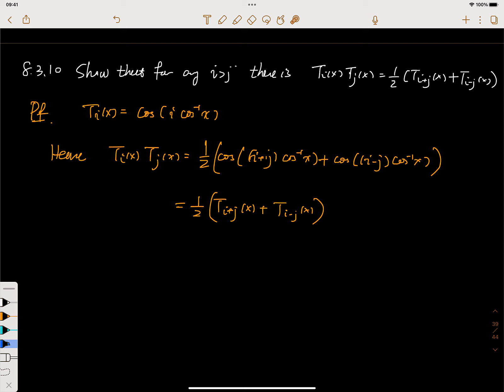Problem 8.3.10. We want to show that for any i and j, T_i(x)T_j(x) should be equal to one half of T_(i+j)(x) plus T_(i-j)(x). This is actually just using the property for trigonometric functions.